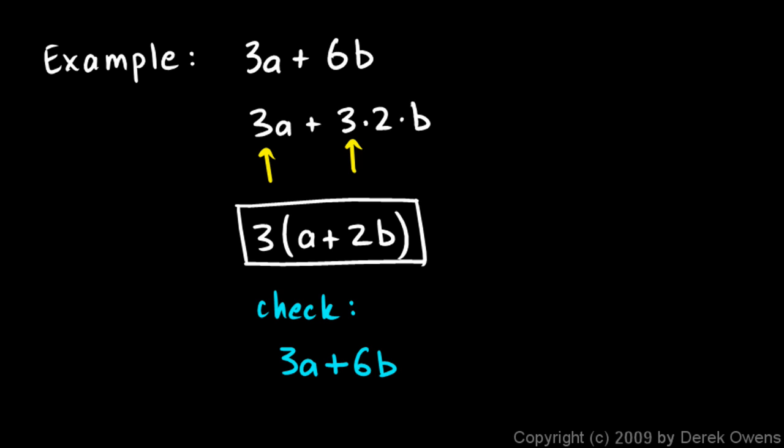These two factors, the 3 and the (a plus 2b), when multiplied together, give me the original expression. And again, take note, we found this common factor of 3, and we factored it out.